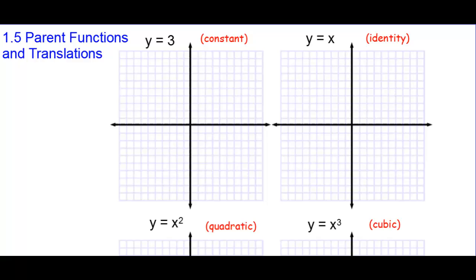Section 1.5: Parent Functions and Translations. Our first parent graph — the graphs that you need to know — is y equals 3. That is a line where y is equal to 3. This is a horizontal line.